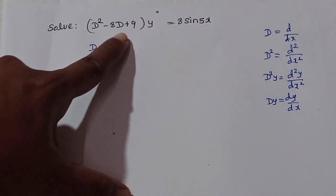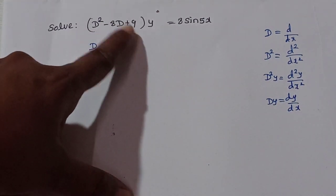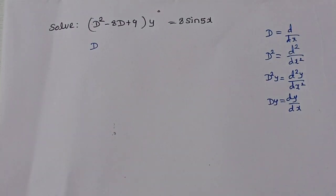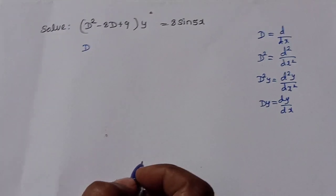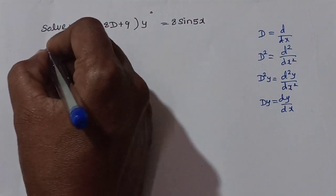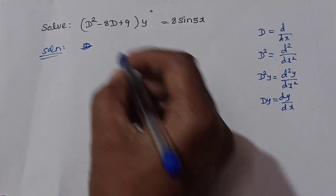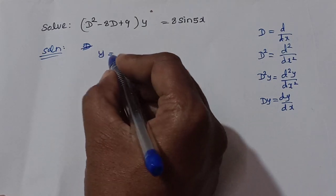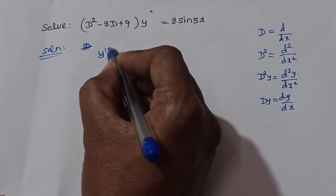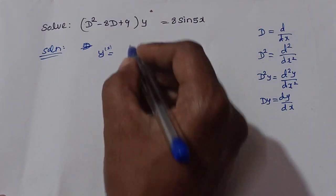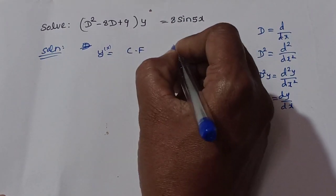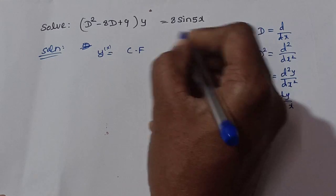The coefficients are 1, minus 8, and 9, and the right hand side is a function of x. This is a second order linear differential equation with constant coefficients. We need to find Y, the dependent variable, as a function of x. The solution requires finding the complementary function and the particular integral.